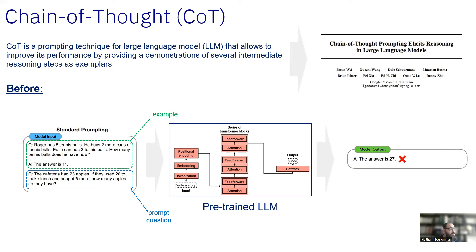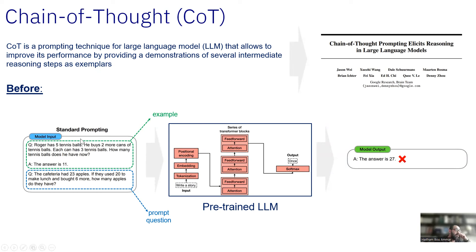The idea goes as follows. Imagine you have a pre-trained large language model — it has a tokenizer, embedding, positional encoding, and a softmax that gives us the distribution on the output from which we can sample a token. This is a pre-trained LLM, like GPT-4, GPT-3.5, LLaMA, or something that's already pre-trained. We used to do standard prompting where we give it an example.